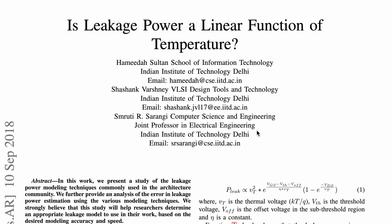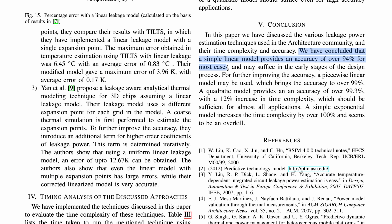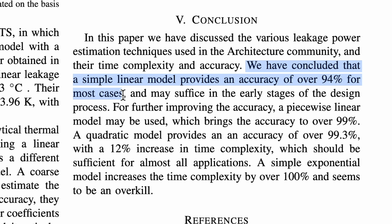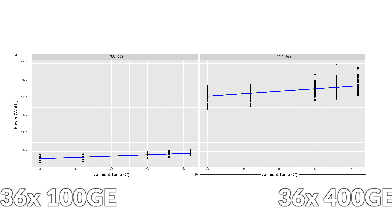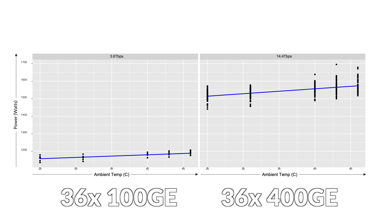Leakage power is almost linearly increasing based on temperature. Take a look at this line card configured with 36 ports — 100GB on the left and 400GB on the right. They are not doing anything, yet the power used is regularly increasing when the ambient temperature goes up.